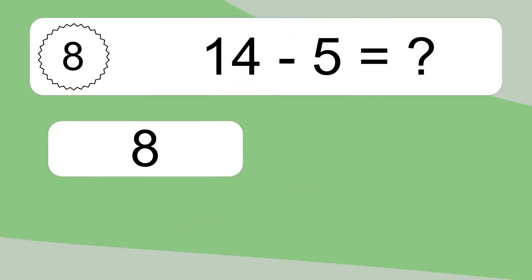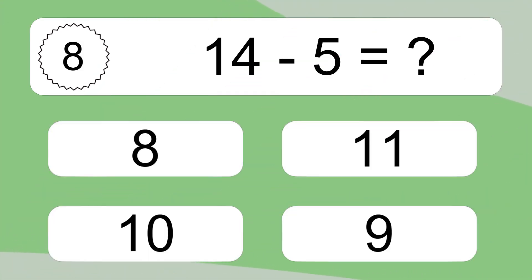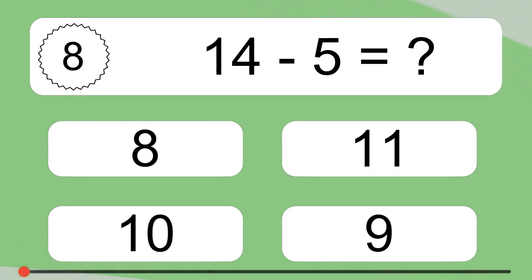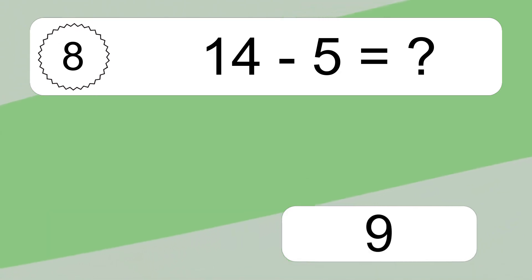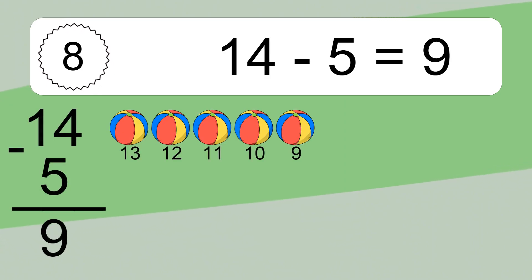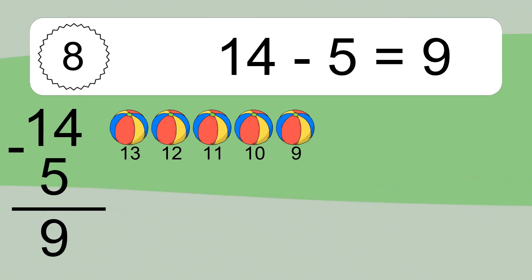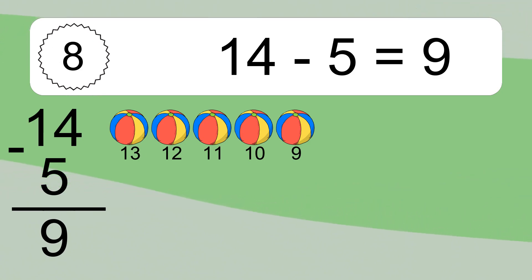14 minus 5 equals what? 14 minus 5 equals 9. Let's count it: 13, 12, 11, 10, 9.